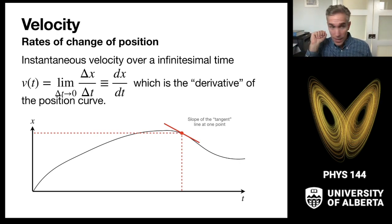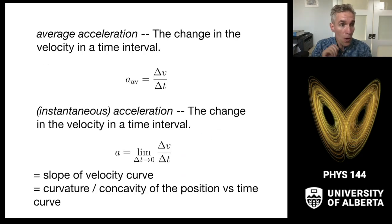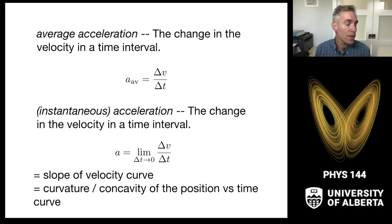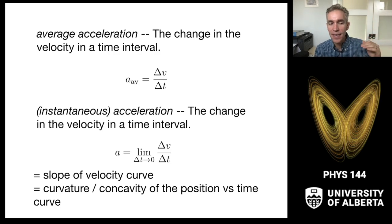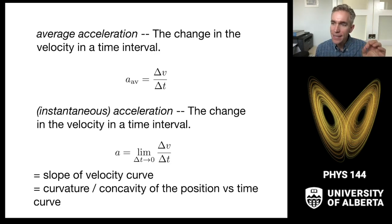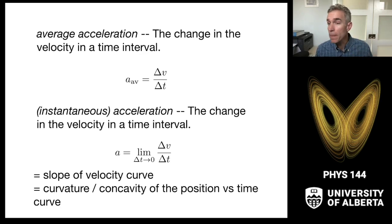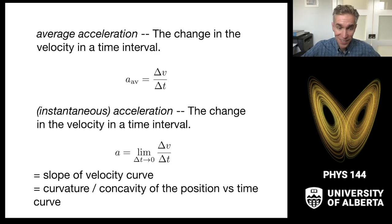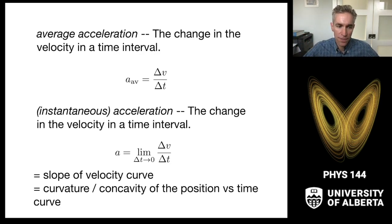We also look at acceleration. The acceleration is the change in velocity over a time interval. We can carry out this limit again to get instantaneous acceleration at an infinitesimally small time interval — that's the limit of delta v over delta t as delta t goes to zero. This is the slope of the velocity curve, and it equals the curvature — or concavity — of the position versus time curve.